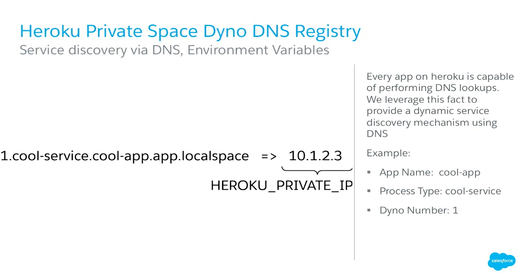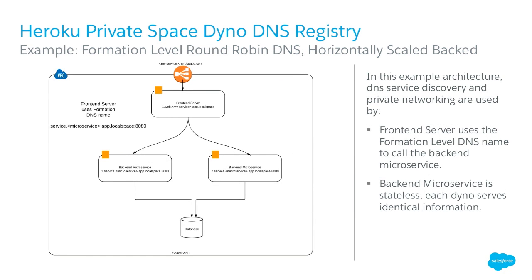This enables a whole new class of microservices applications on Heroku. The first use case: formation-level round-robin DNS. A front-end server — your web UI or API front-end — makes calls to back-end stateless microservices scaled up and down as needed. The front-end uses the formation-level DNS name to access back-end servers through plain round-robin DNS or client-side load balancing.